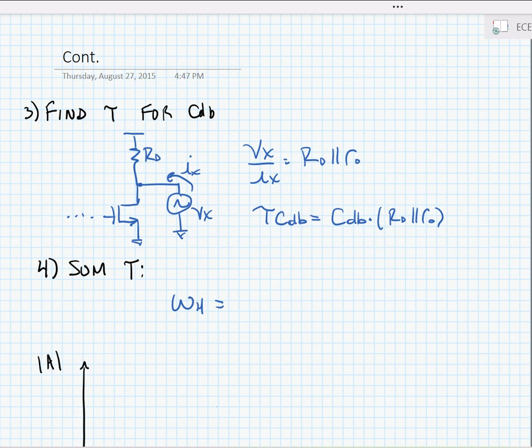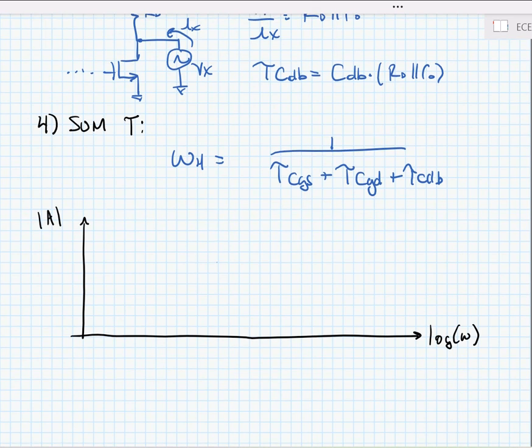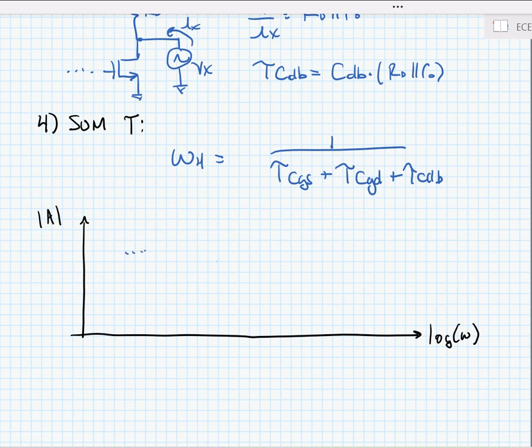Now, we need to sum the tau's and find the high frequency pole. So, our high frequency pole would be 1 divided by tau CGS plus tau CGD plus tau CDB. And if we were looking at what our frequency response looked like, we haven't found what the low frequency response looks like, the mid band response we would find by inspection analysis. And then we just found that the high frequency starts at omega H and rolls off at minus 20 dBs per decade.